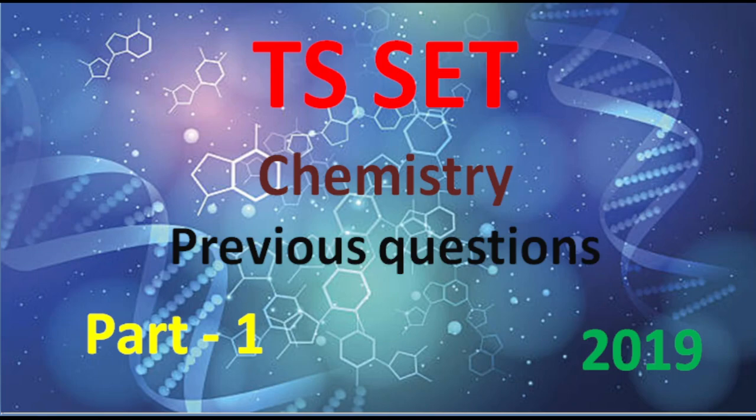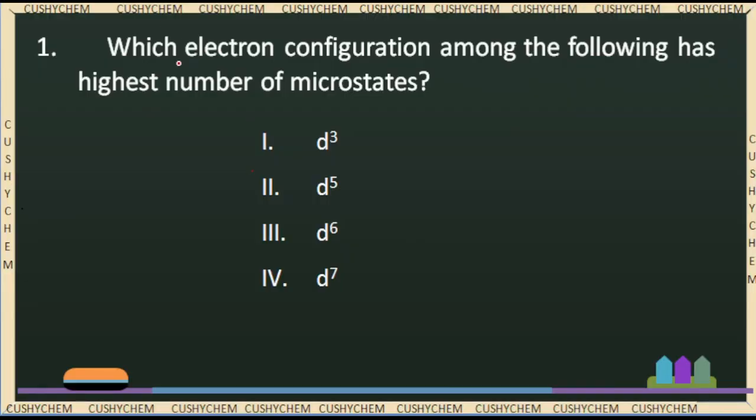Let us start our video. I will start with the first question. Question number 1: Which electron configuration among the following has the highest number of microstates? This question is from the JL series — the Junior Lecturer exams. The syllabus is very basic, designed from the US standard — from 10th class, Intermediate, degree, PG level — and this is at a specialization chemistry level, almost to NET standard, but these questions are a bit tough.